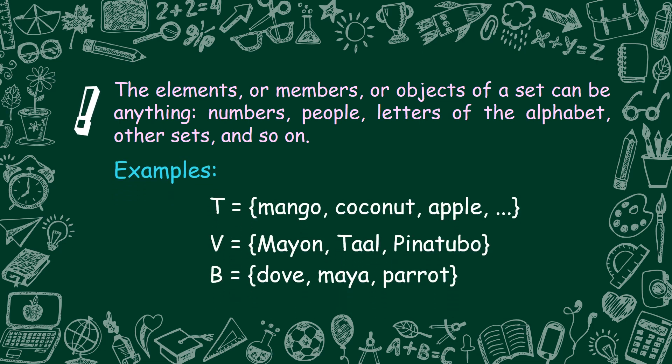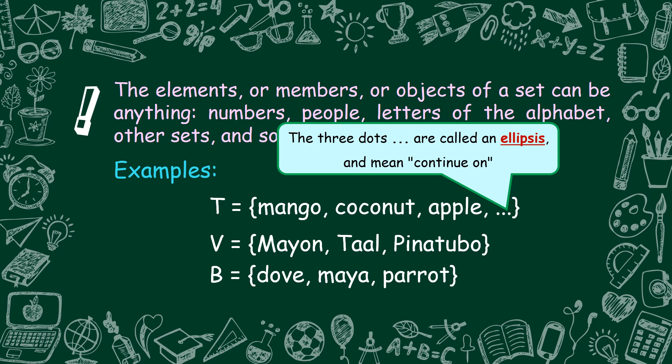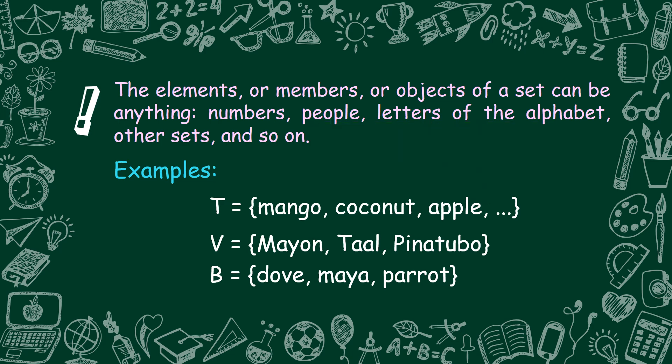Examples. Set T is equal to mango, coconut, apple, ... The three dots are called an ellipsis and mean 'continue on' — it is also a symbol for infinity, meaning there are more elements that follow. So, what can you say about Set T? Set T is a set of fruits. We also have Set V: V is equal to Mayon, Taal, Pinatubo. Set V is a set of volcanoes.